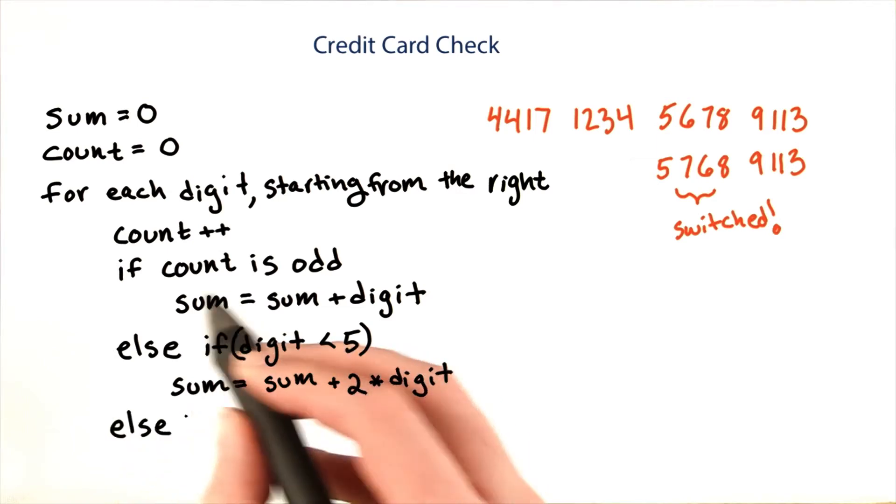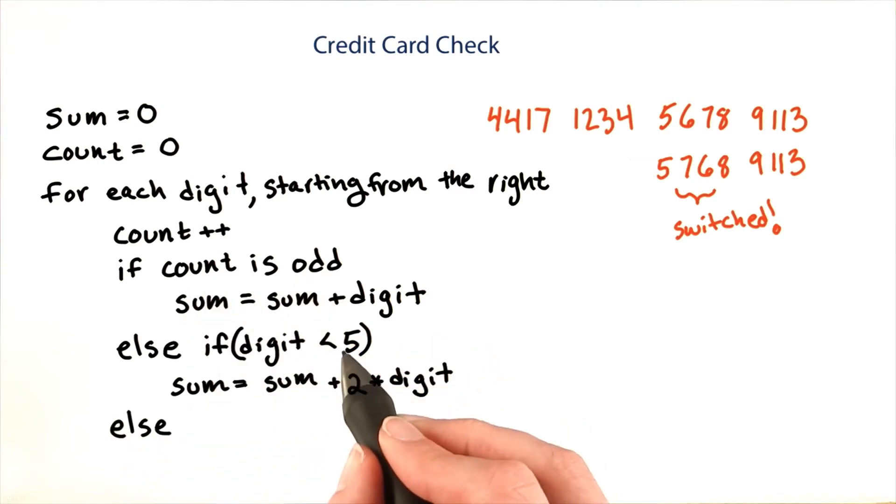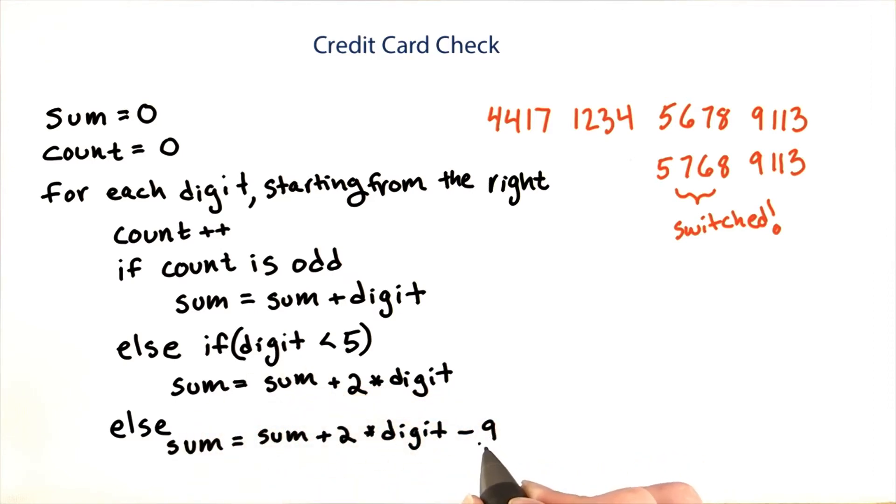Else, if count is even, and the digit is greater than 5, we add twice the digit to the sum, and subtract 9.